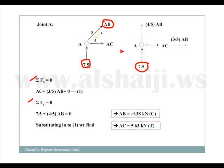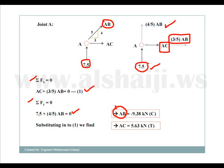Applying equilibrium: ΣFx gives AC plus (3/5)AB equals zero. ΣFy gives 7.5 plus (4/5)AB equals zero. From the second equation we solve for AB and get a negative value, meaning the member is in compression, not tension as assumed. Substituting back into the first equation gives AC equals 5.63 kN in tension. This completes the analysis for members AB and AC.